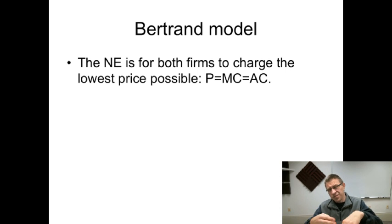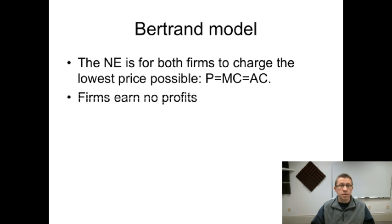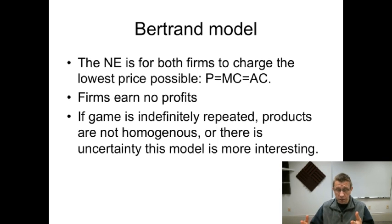But with the Bertrand model, what we see in this very specific stylized example is what we will always see. The Nash equilibrium is for both firms to charge the lowest price possible. The price is going to be equal to the marginal cost, which equals the average cost. So firms are going to make no profits, or at least not any profits beyond the normal profit level. The Nash equilibrium: both firms charge the lowest price possible. Price equals marginal cost, which equals average cost. Firms earn no profits under a Bertrand model.